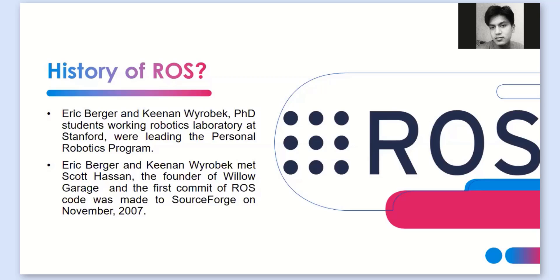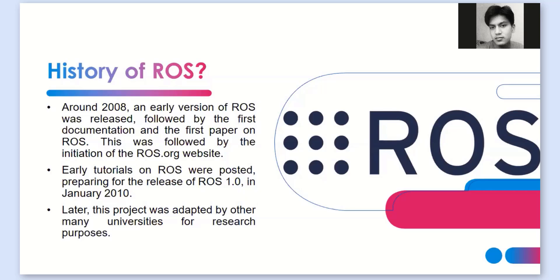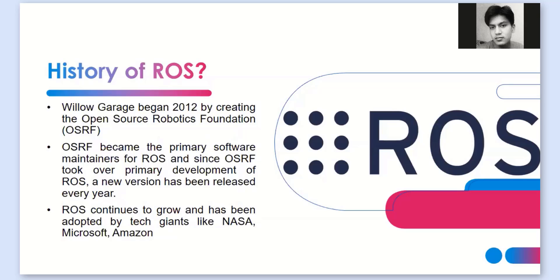Later on, a company called Willow Garage cooperated with these two people and they published ROS to SourceForge. After that, documentation was released, other websites were published, and universities began accepting this software for research and development. Different universities like MIT, UC Berkeley, and Georgia Tech now use ROS for robotics. Eventually, the Open Source Robotics Foundation was formed, which maintained ROS.